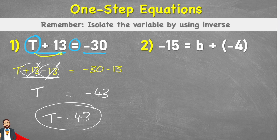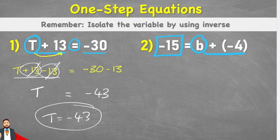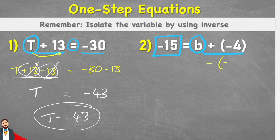Let's have a look at a second example. On this side we have the negative 15 on the left-hand side. And then on this right-hand side, I have my variable that's connected currently to an adding negative 4. So again, to get this variable on its own, we need to break this connection to the adding negative 4. And the only way we can do that is by putting the inverse. So in order to get the inverse of the adding negative 4, we're going to insert a subtract negative 4. And by putting that subtract negative 4 on this side, I therefore have to put it on the other side as well.